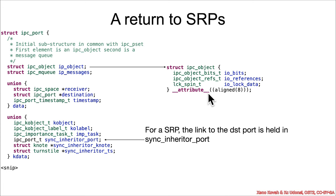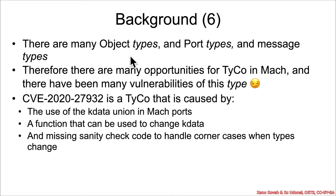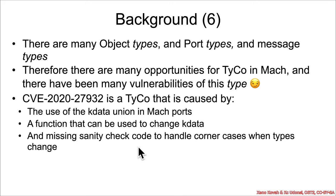Returning to special reply ports: the ipc_port kdata sync_inheritor_port field is a member of this union, which is your hint for where the type confusion can come in. There are many object types, port types, and message types within XNU, which is why there are many opportunities for type confusion in Mach. This particular vulnerability is a type confusion caused by the use of the kdata union for Mach ports, a function that can change what the kdata refers to, and missing sanity check code to handle corner cases for what exactly this kdata is referring to.